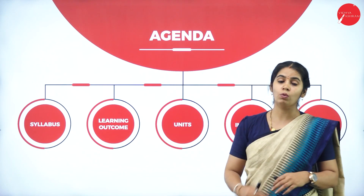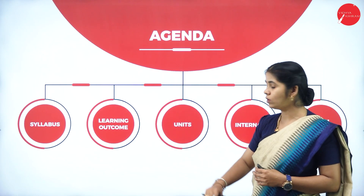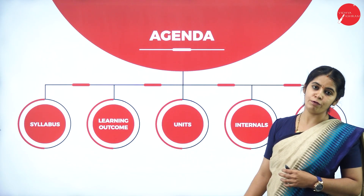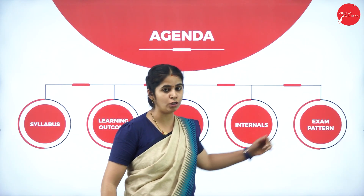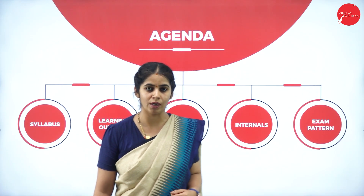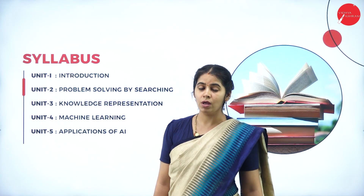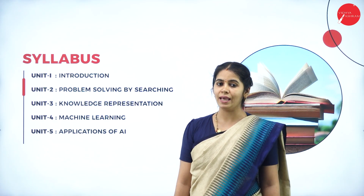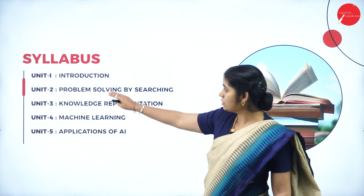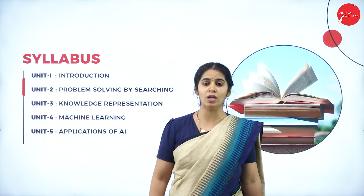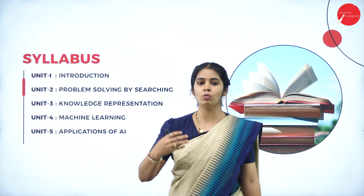The agenda of this session is to discuss the syllabus, discuss the learning outcome, how many units you have for this particular semester, and how the internal marks and the examination pattern will be distributed. In Artificial Intelligence and Applications, you will be having five units. The first unit is the introduction — what is artificial intelligence, what is the agent, and what is the environment.